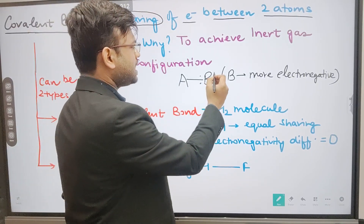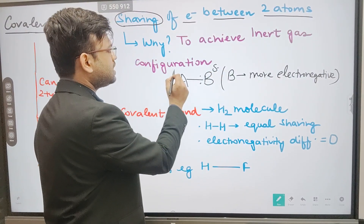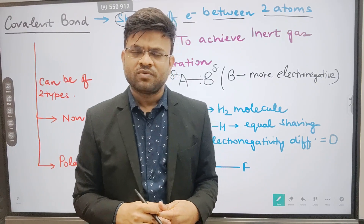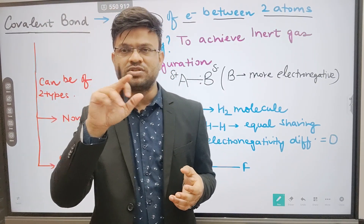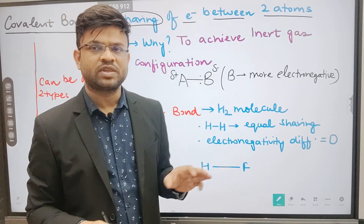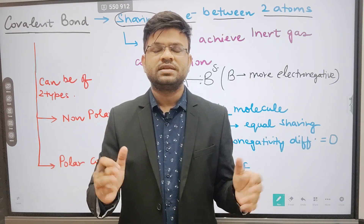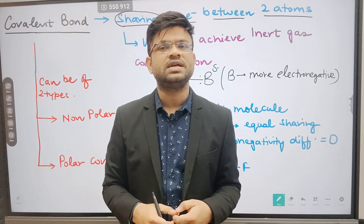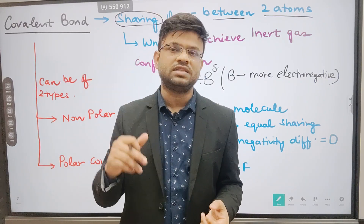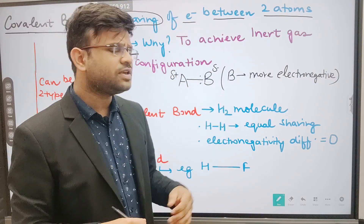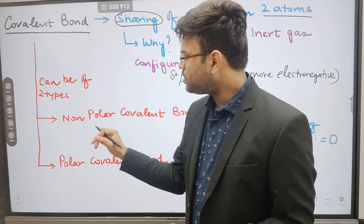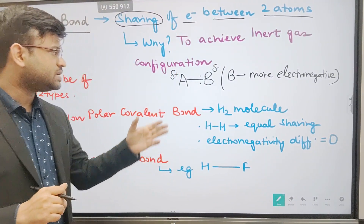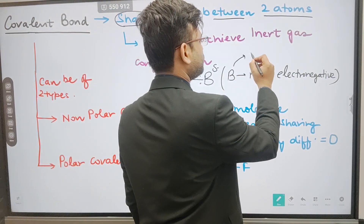Because of that, atom B would have a slightly negative charge and atom A would have a slightly positive charge — you can also call these partial negative and partial positive charges. Why partial? Because the bond has not yet broken. Only when the bond breaks can we say positive or negative charges are forming, as in the ionic bond — for example, NaCl where Na⁺ and Cl⁻ are ions. What I explained above is for the polar covalent bond.